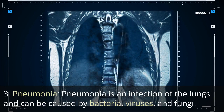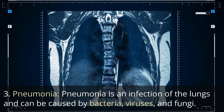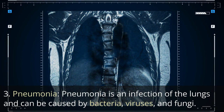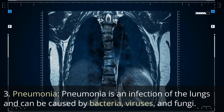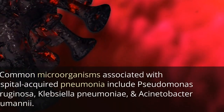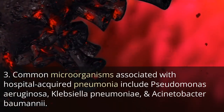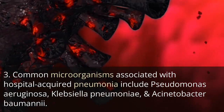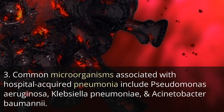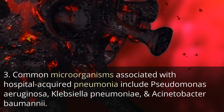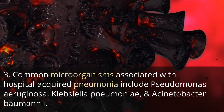The third type is pneumonia. Pneumonia is an infection of the lungs and can be caused by bacteria, viruses, and fungi. Common microorganisms associated with hospital-acquired pneumonia include Pseudomonas aeruginosa, Klebsiella pneumoniae, and Acinetobacter baumannii.